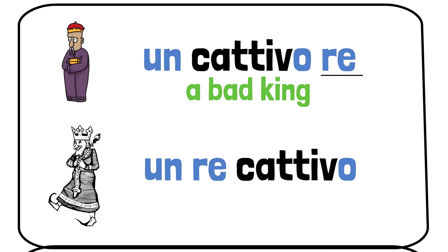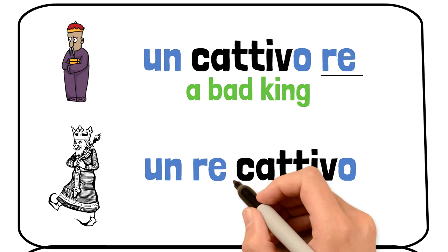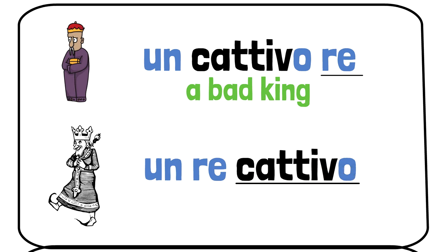In the second sentence, un re cattivo, the last word is cattivo, bad. Therefore, the fact that he is bad becomes more important than the fact that he is a king. In this instance, it is the quality of the person we are describing rather than his attitude towards his role. So cattivo, un re cattivo, no longer means bad, it means evil. Un re cattivo translates to an evil king.